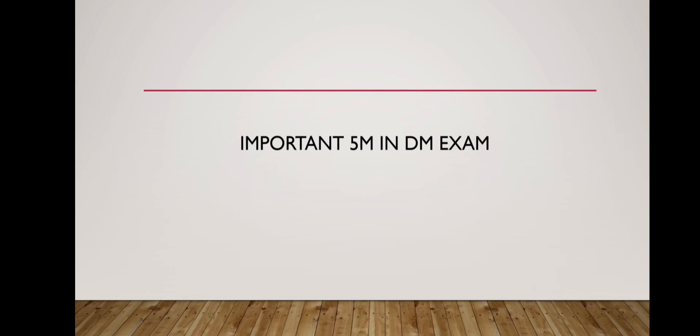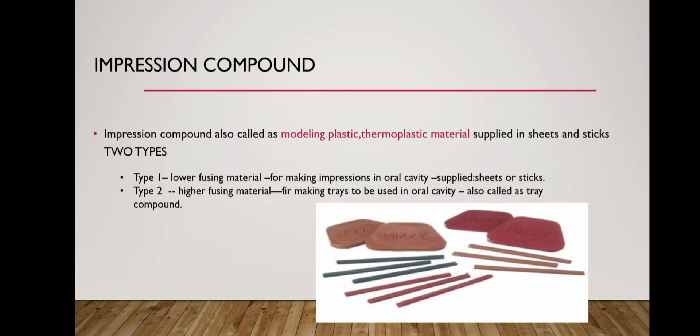This is an important five-mark question in the Dental Materials exam. Impression compound is also called modeling plastic — a thermoplastic material supplied in sheets and sticks. These are of two types: Type 1, a low-fusing material used for making impressions in the oral cavity, supplied as sheets or sticks; and Type 2, a high-fusing material for making trays used in the oral cavity, also called tray compound. In this picture, we can see different types of impression compounds.